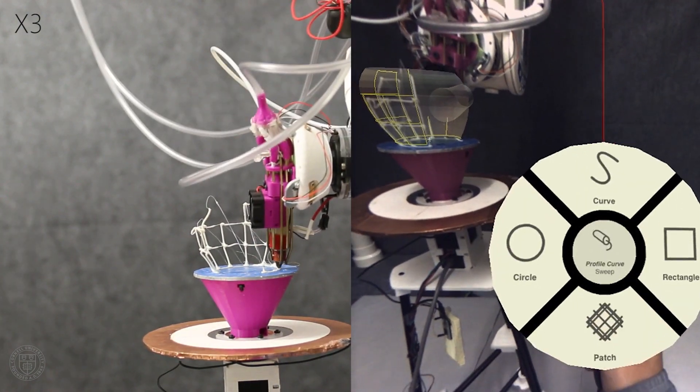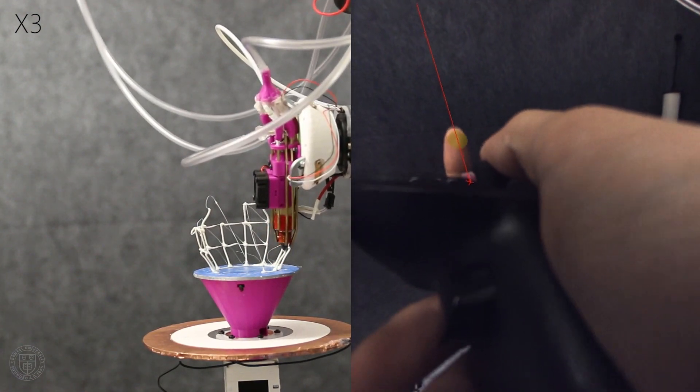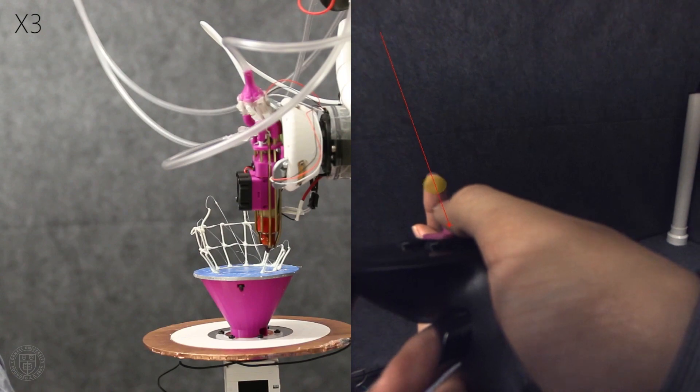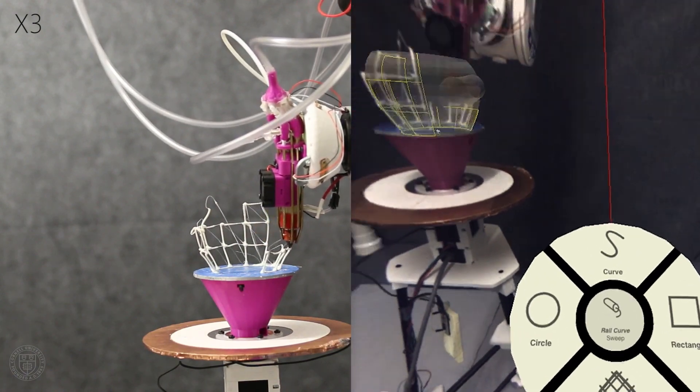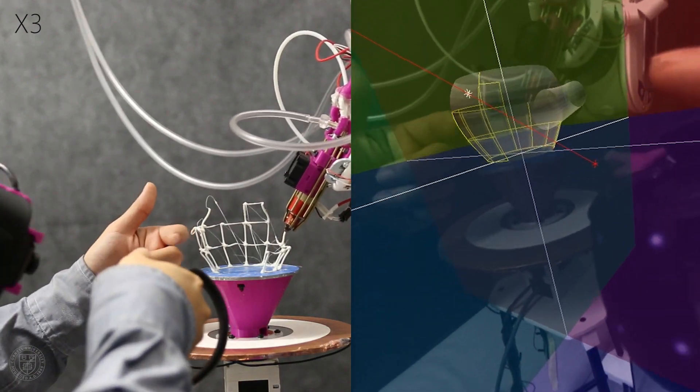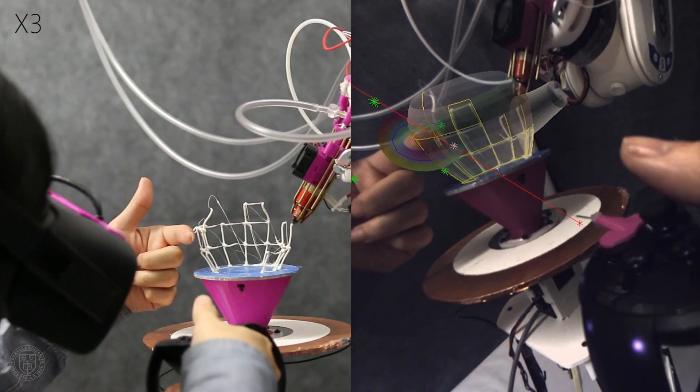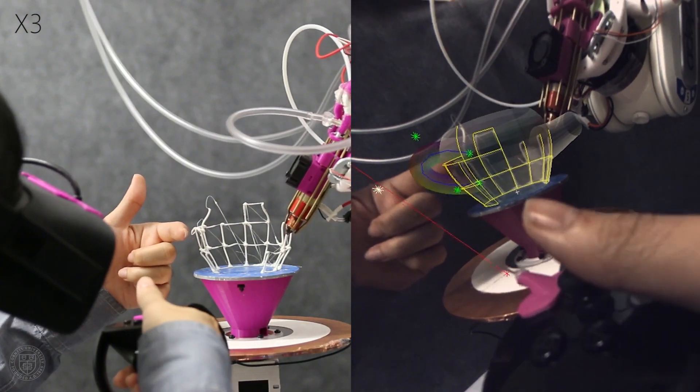To design the handle, the user first chooses a cross section based on the width of his finger. The designer wants the handle to fit snugly around his finger, so he rests his finger against the partially printed teapot and builds a handle directly around his finger for a precise fit.